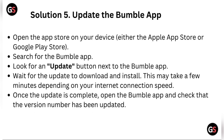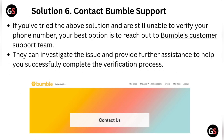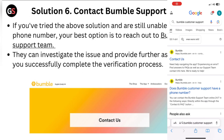Solution five: update the Bumble app. Open the app store on your device and search for the Bumble app. Look for an update button next to the Bumble app and wait for the update to download and install — this may take a few minutes depending on your internet connection speed. Once the update is complete, open the Bumble app and check that the version number has been updated.